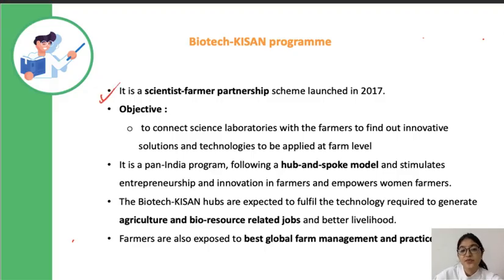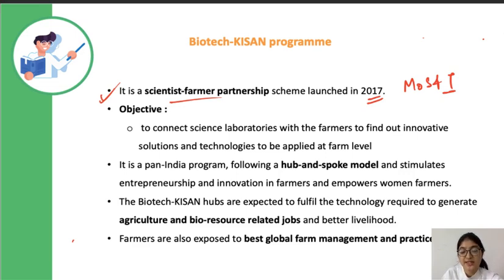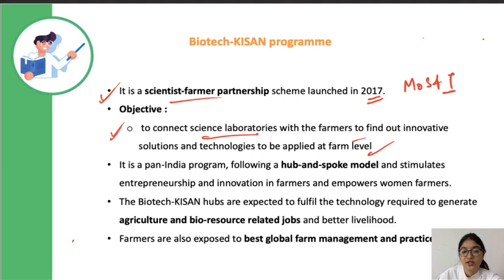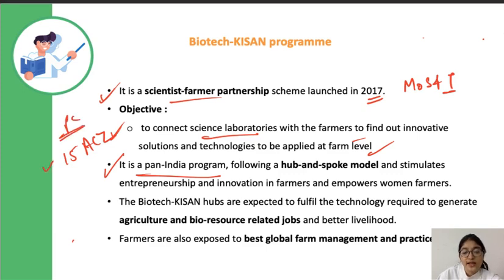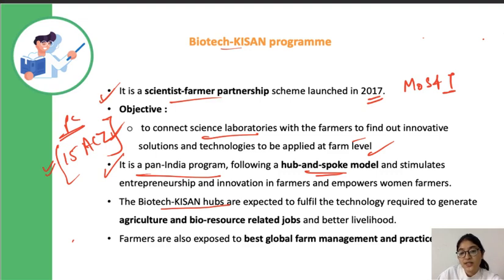This is a scientist-farmer partnership scheme launched in 2017 by the Ministry of Science and Technology. Farmers will tell their problems and inform scientists about the issues they face at the local and field level. Scientists will then provide innovative solutions and technologies. The objective is to connect science laboratories with farmers. It is a pan-India program, and the entire country has been divided into 15 agroclimatic zones by the Planning Commission. At each agroclimatic zone there are different Biotech Kisan Hubs implementing these schemes, following a hub-and-spoke model.